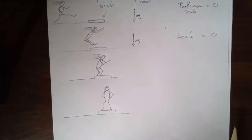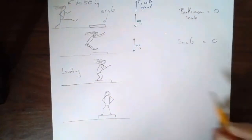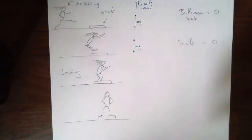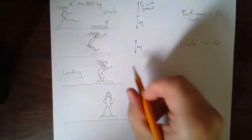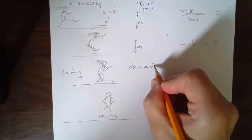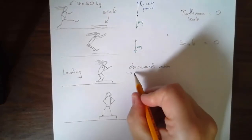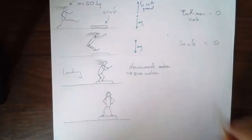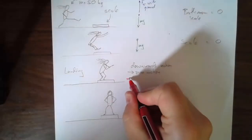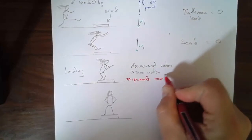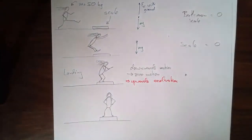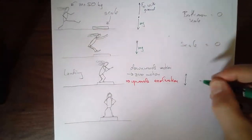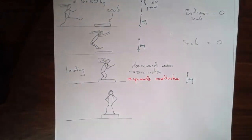Now it gets interesting - we're landing on it. While landing, my downward velocity goes to zero. The downwards motion becomes zero motion, so we must have an upwards acceleration. That means the normal force on you has to be bigger than your weight, otherwise you wouldn't start accelerating upwards. If those two were equal, you'd keep falling at a constant speed and drag the scale with you.